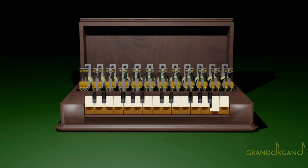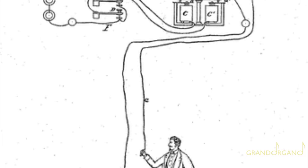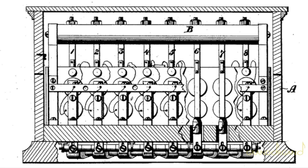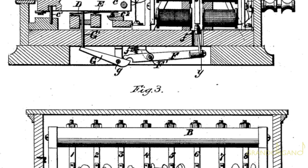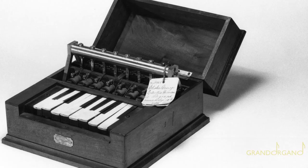Elisha Gray passerà però alla storia degli strumenti musicali elettronici perché fu il primo a intuire che lungo il filo telefonico, considerando che la voce è alla fin fine un suono, potevano essere trasmesse frequenze modulate secondo la scala musicale, generate da una tastiera che forse per prima poteva essere chiamata elettronica, per far suonare a distanza un trasduttore in grado di recepire quelle frequenze. Nel 1876 brevettò il Musical Telegraph, o Electro Harmonic Telegraph, che è l'apparecchio di cui parleremo in questo filmato.